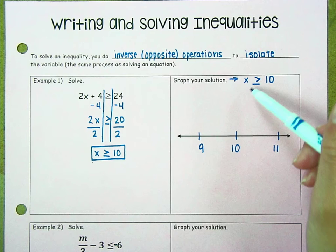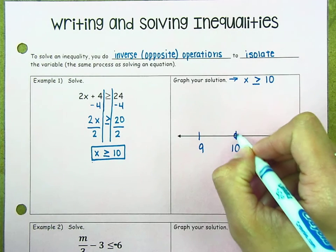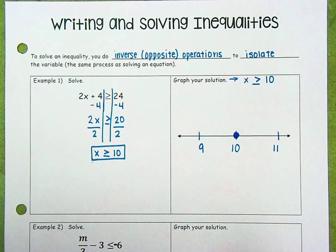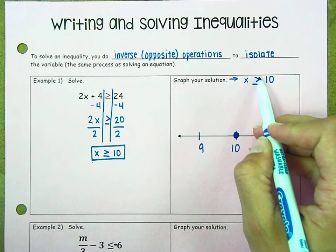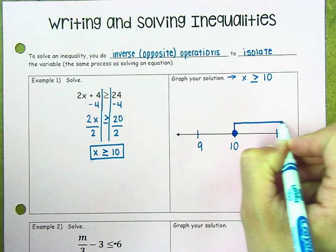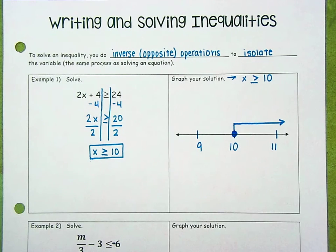Because 10 is included in the possible values that x can be, I'm going to use a closed circle. And my arrow on my graph is going to point in the direction of all of the possible solutions. So we know if x has to be bigger than or equal to 10, all of those possible solutions are going to be to the right. So my arrow is pointing to the right on my number line.